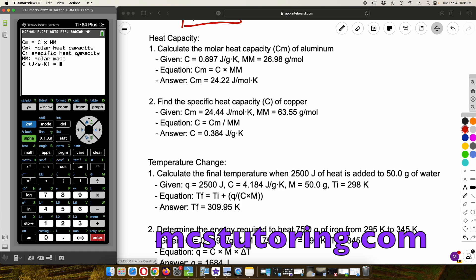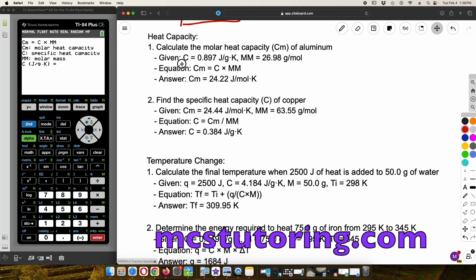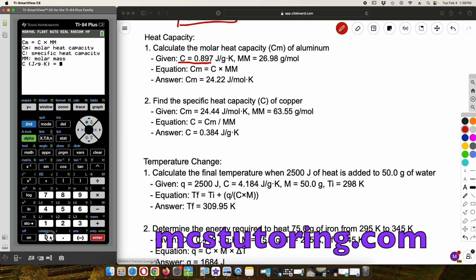C sub M is the molar heat capacity. C is the specific heat capacity. I believe that's the energy required to raise something one degree Kelvin or Celsius. But probably Kelvin is better. And then MM is the molar mass. So what is the C here? The C is given as 0.897. So let's enter that 0.897. Again, this is available at mcstutoring.com. Anytime I make an addition to this or a change, if you purchase it, you will get notified and you will get an email of the updated version in perpetuity. Okay. MM. What's the MM? 26.89.